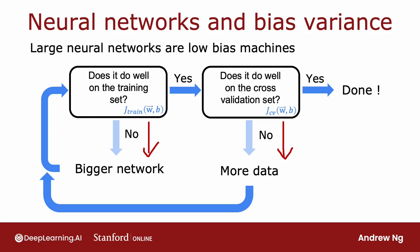Now of course, there are limitations to the application of this recipe. Training a bigger neural network does reduce bias, but at some point it does get computationally expensive. That's why the rise of neural networks has been really assisted by the rise of very fast computers, including especially GPUs or graphics processor units. Hardware traditionally used to speed up computer graphics, but that turns out has been very useful for speeding up neural networks as well. But even with hardware accelerators beyond a certain point, the neural networks are so large and take so long to train, it becomes infeasible.